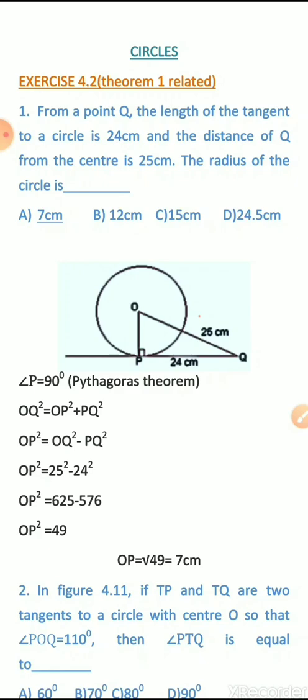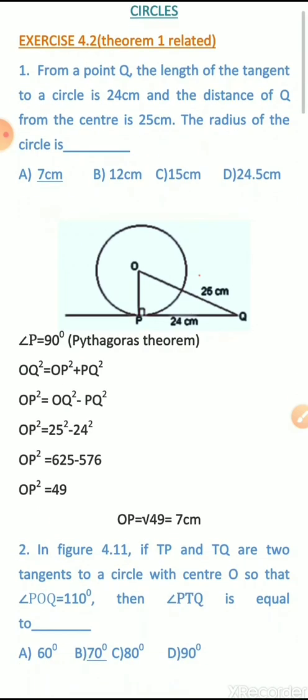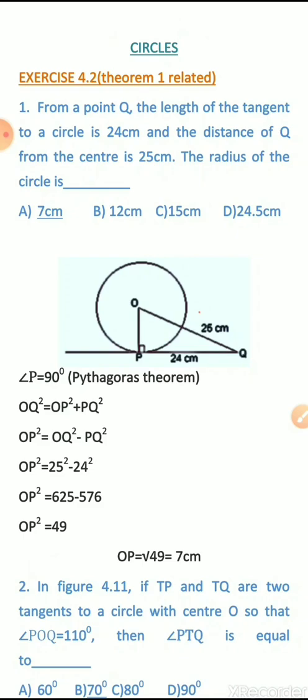As you all know, what does Theorem 1 state? Theorem 1 statement: the tangent at any point of a circle is perpendicular to the radius through the point of contact. That means the radius and the tangent are perpendicular at the point of contact. We will use Theorem 1 to solve these 7 problems.